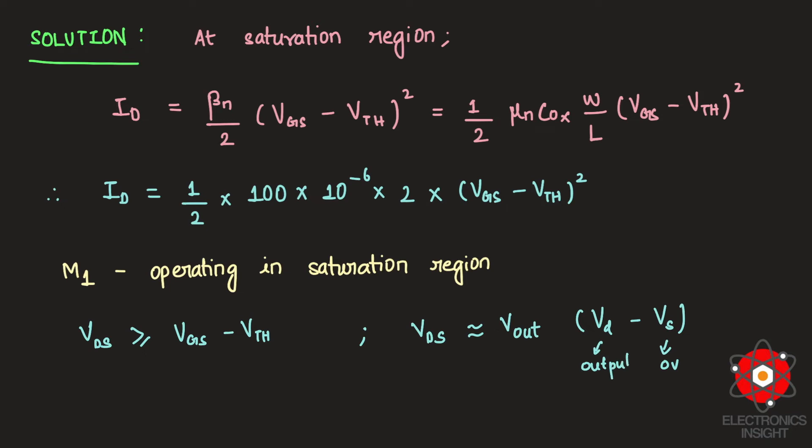Therefore, we can write the voltage at the drain terminal as equivalent to the output voltage. So therefore here my VD is equal to Vout. I will just cancel out the common terms here so that I can simplify.